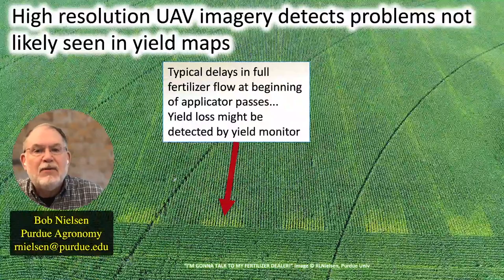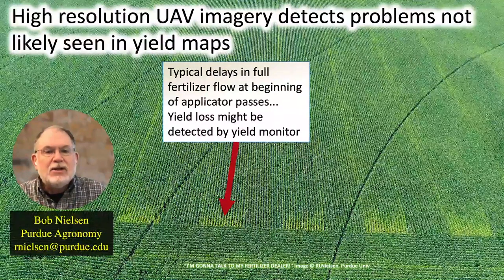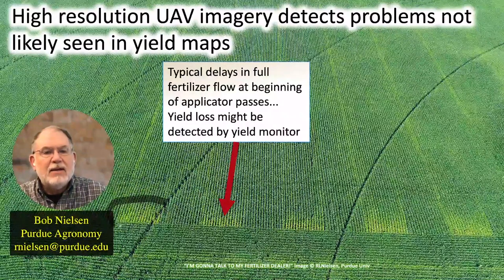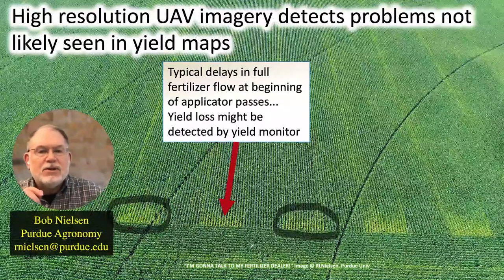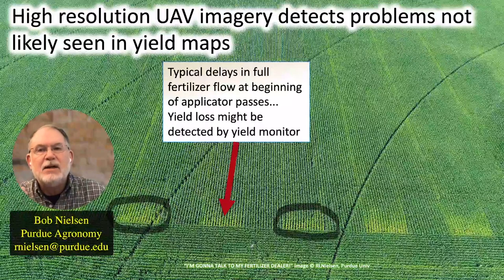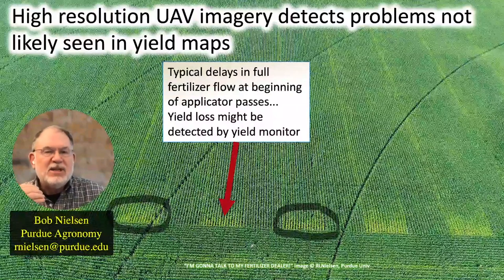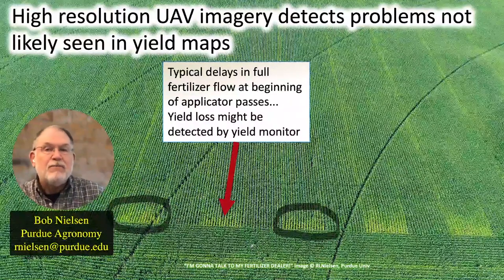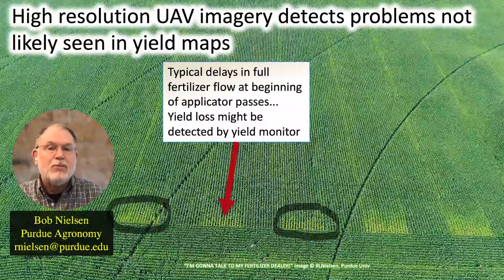Here's another example of a field where drone imagery was showing us areas of nitrogen deficiency. The first thing I'll highlight are these areas at the beginning of the nitrogen applicator passes that are nitrogen deficient. These are the typical kind of things we see when fertilizer flow is not yet at full flow as you begin an applicator pass. So it's not uncommon to see these areas that are maybe 20 to 30 feet long that are nitrogen deficient. The yield monitor might pick those up if they're big enough — if you've got all 16 rows and it's 20 or 30 feet long, the yield monitor will probably detect them.